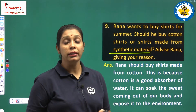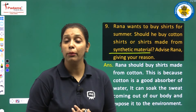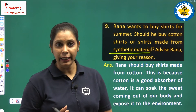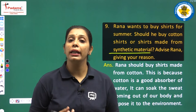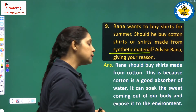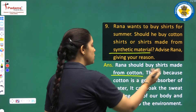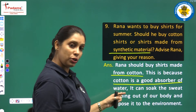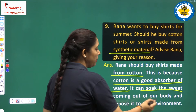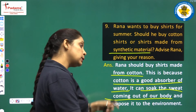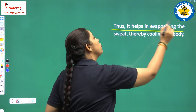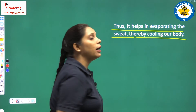Cotton absorbs the sweat that our body produces in summer and it gives a comfortable feeling. As soon as sweat is absorbed, it gives us cooling also. Rana should buy shirts made from cotton because cotton is a good absorber of water; it can soak the sweat coming from the body and expose it to the environment. Thus it helps in evaporating sweat and thereby cooling our body.